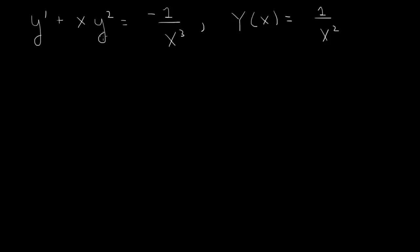And we also know a solution to this equation, which is y of x equals 1 over x squared. The derivative of 1 over x squared, which is x to the minus 2, is minus 2 divided by x cubed.